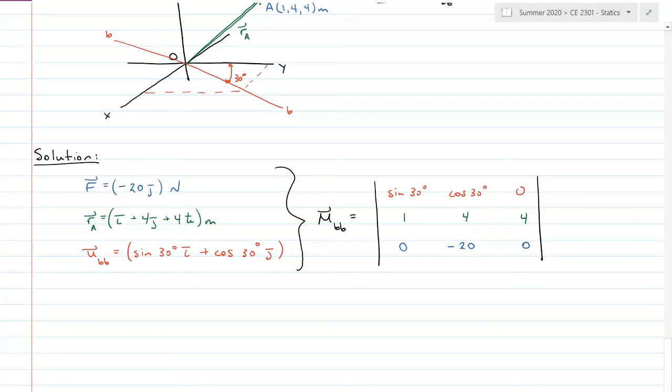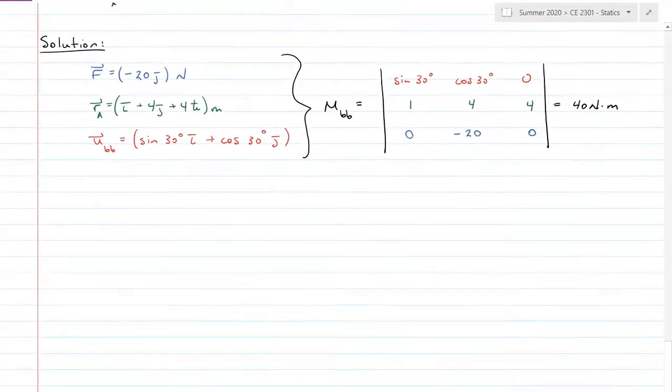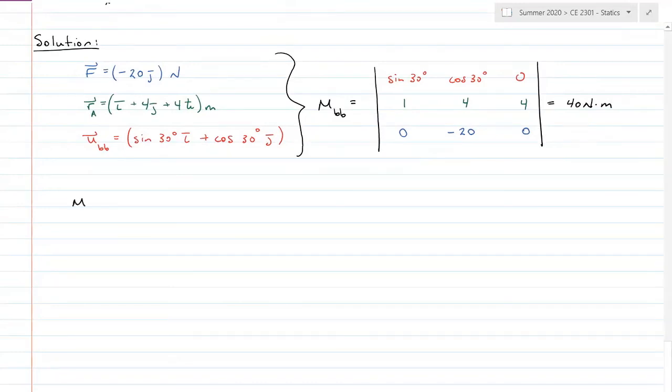Finding the determinant of this vector, my solution is a magnitude of 40 newton meters. Now that I have the magnitude, I can multiply it to the unit vector. Moment BB is equal to moment BB times the unit vector BB. And this is going to equal 20i plus 34.6j, and we are still in newton meters.